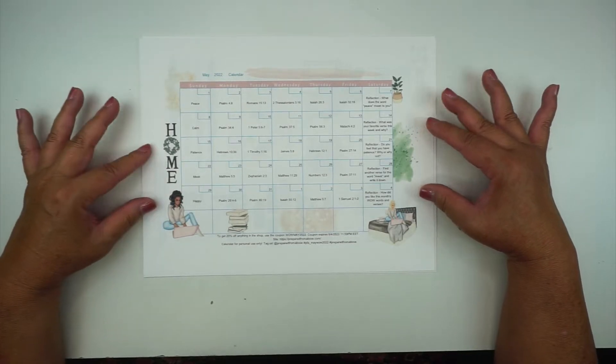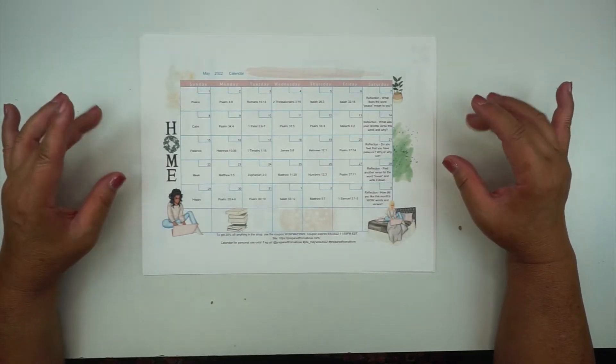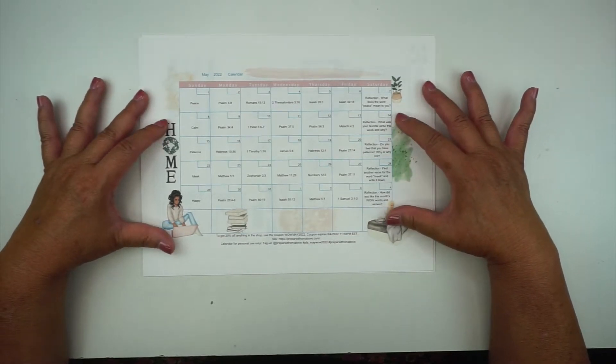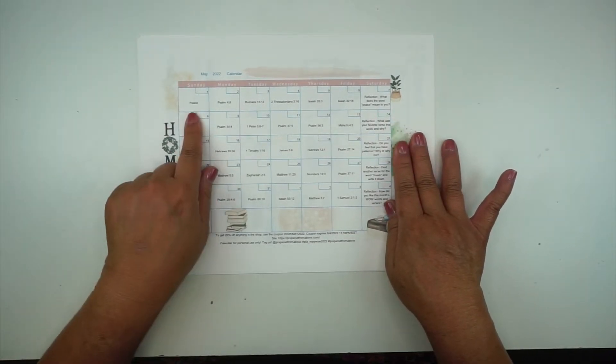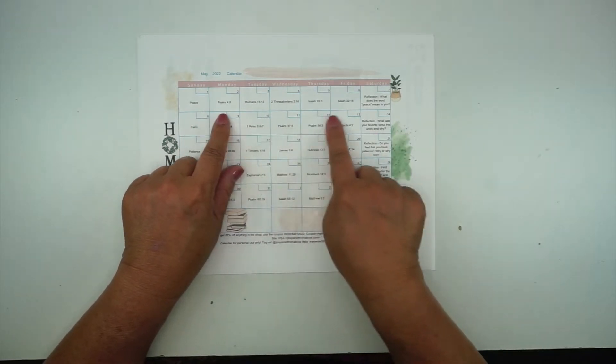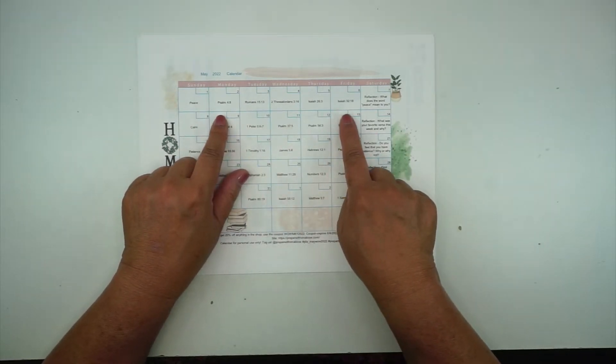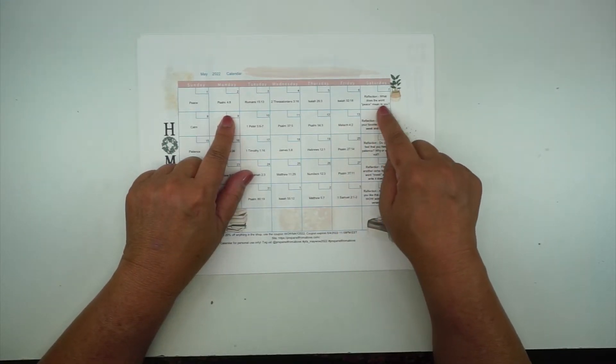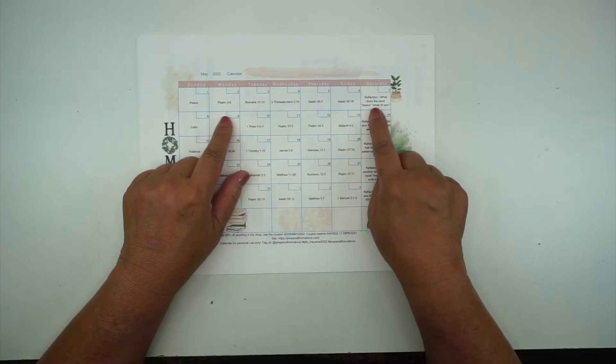If you're not familiar with the WOW Kits, we take one month and we do one word per week where we have one word that we're focusing on for the week. Then we have five scripture verses that correlate with this word, and then on Saturday or Sunday there's a reflection question.